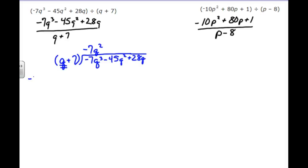Now we need to multiply negative 7q squared times q plus 7 to determine what goes right here on top of this line. Negative 7q squared times q is negative 7q cubed. Couldn't they have chosen another variable? And then negative 7q squared times 7 is negative 49q squared.